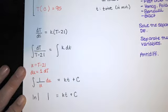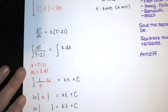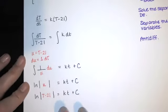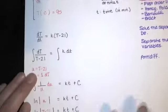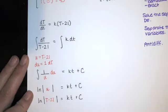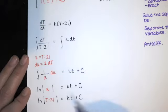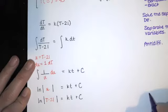The anti-derivative of 1 over u is the natural log of the absolute value of u plus C. We don't need the extra plus C on the left because it's absorbed by the C on the right. Substituting back, u is T minus 21, so we have the natural log of the absolute value of T minus 21 equals kt plus C. Now if we want to get T by itself — and we generally do in an application problem, since we need T as a function of time — we need to do a bit of algebra.